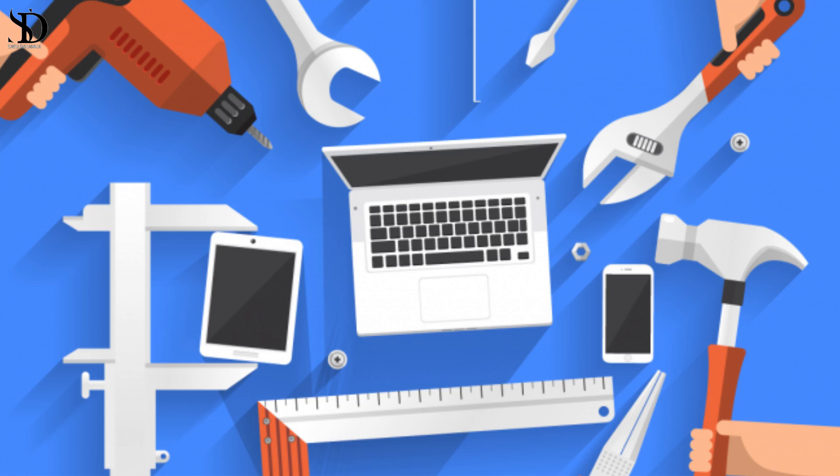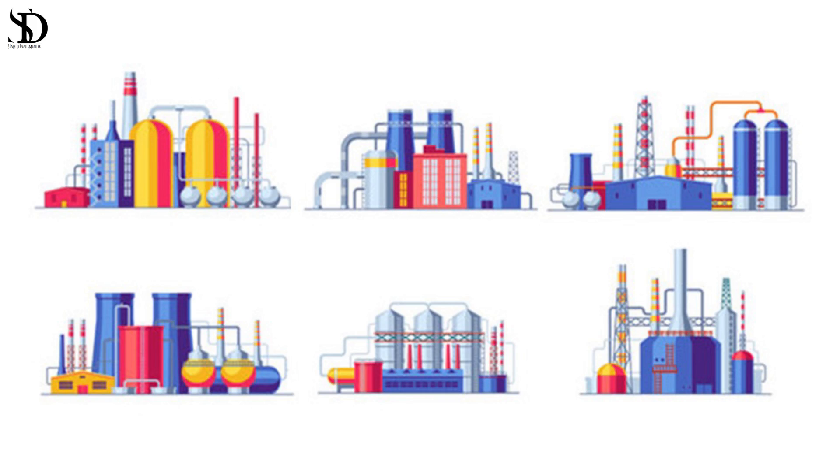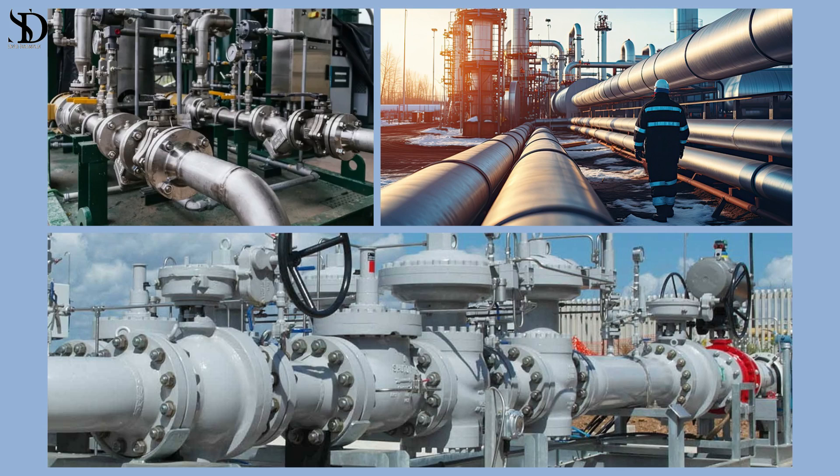Concluding: differential pressure flow meters, including orifice plates, venturi tubes, and flow nozzles, offer diverse solutions for measuring fluid flow rates across various industries. Each type presents its advantages and limitations, making it imperative to select the most suitable device based on specific application requirements to ensure accurate and reliable flow measurements. If you have complex and specific scientific questions or engineering problems regarding the topics I have explained, you can contact me.